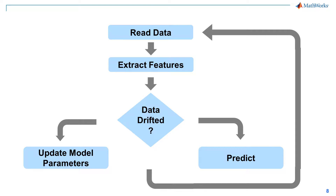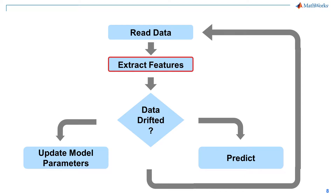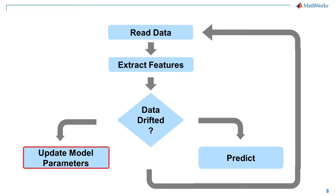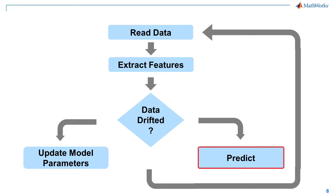Here's the structure of the loop at the core of an incremental learning algorithm. First, you check for new data, like from the Kafka stream. Next, you extract features if needed — in our demo, we got away without feature extraction because the data signatures are very distinct. Then you check whether a drift has occurred. If so, you apply the incremental learner and get the model parameters updated. Otherwise, you simply apply the current model to obtain predictions on the new data.